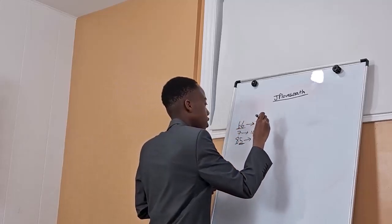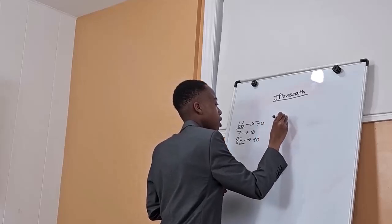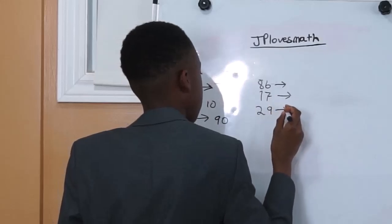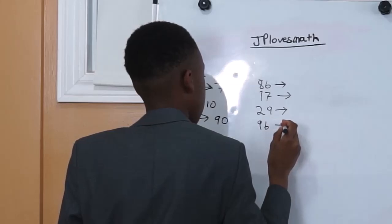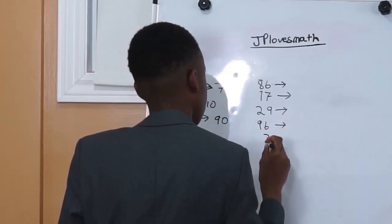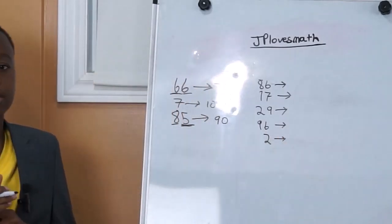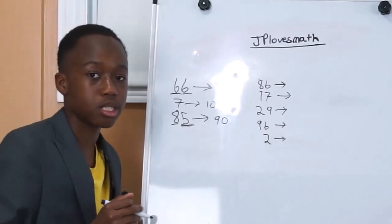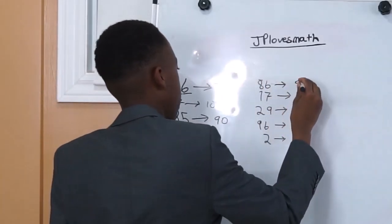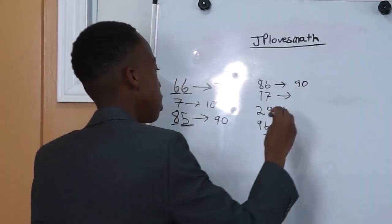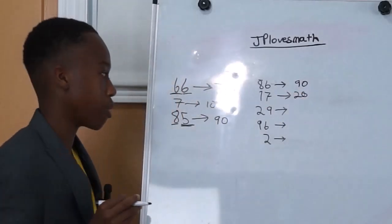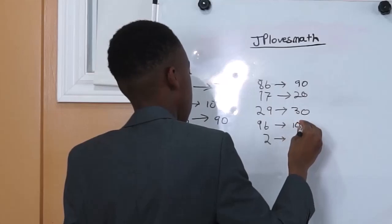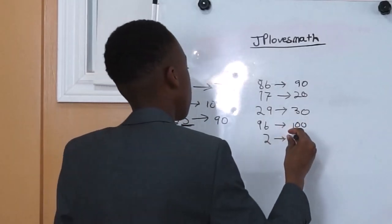I'm going to give you a few questions — try to solve them. We will now be taking them up. 86 would be rounded up to 90. 17 would be rounded up to 20. 29 would be rounded up to 30. 96 would be rounded up to 100. And 2 would be rounded down to 0.